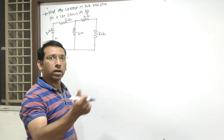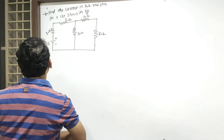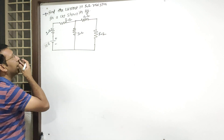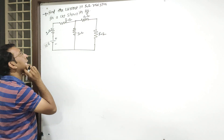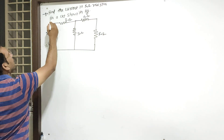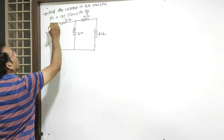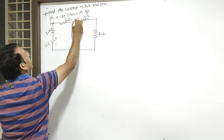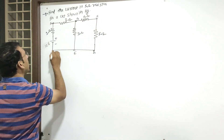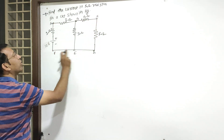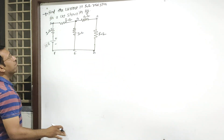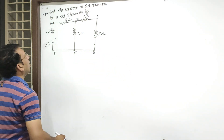Rule number one: see towards the problem — how many loops are there? इस loop को identify करने के लिए हमको सबसे पहले इसको नाम देने पड़ेंगे — A, B, C, D, E, F — चलो नाम दे दो। यह common है — यहाँ एक दिया, तो भी चलेगा। मैं बार-बार आपसे बोल रहा हूँ: